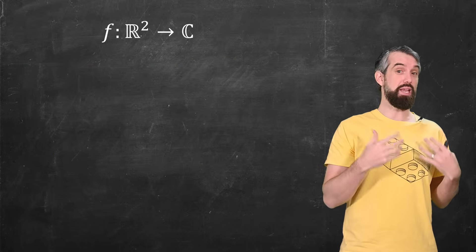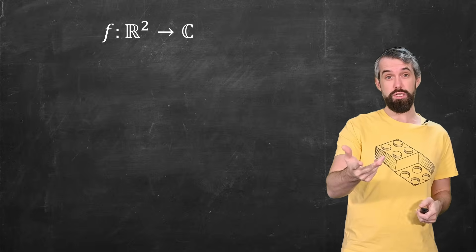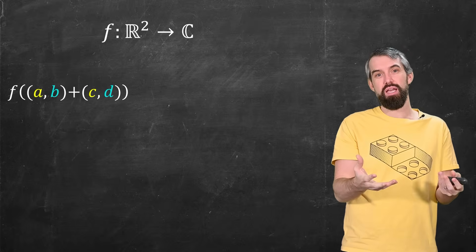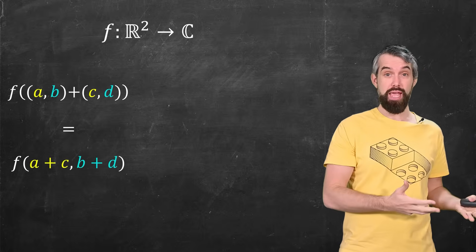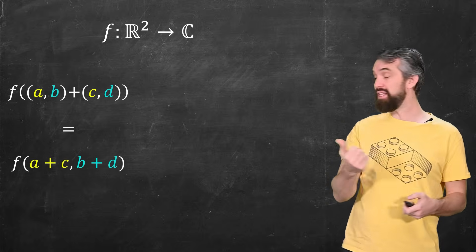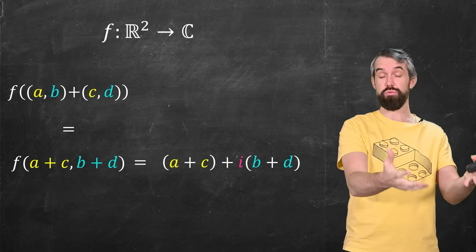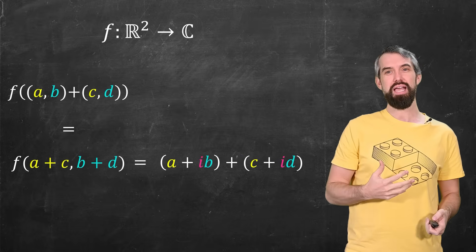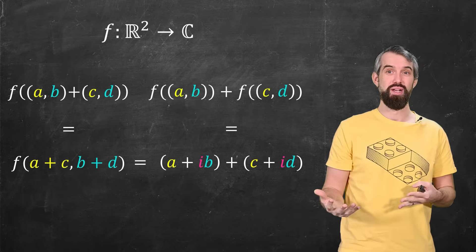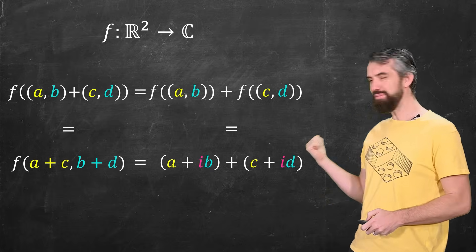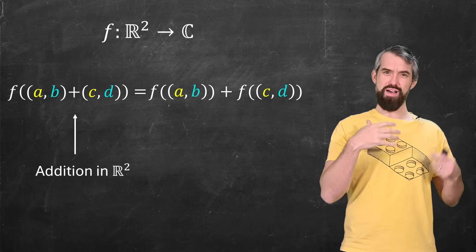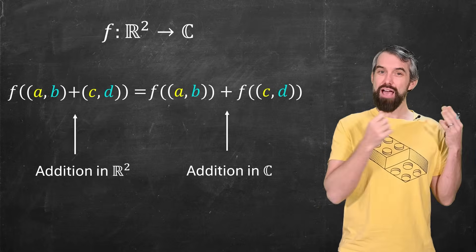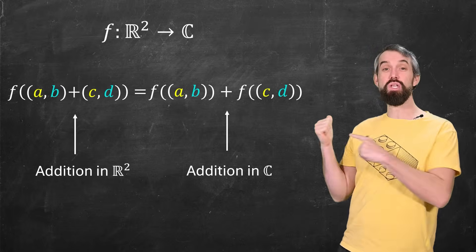And ultimately, the way we express this in mathematics formally is, remember that function that went between the two? Well, if I say, what happens if I take this function and I add two things ab plus cd? I can do that addition in the real plane and get ac plus bd. If I take the function that's going to give me this complex number, my function takes the pairs of real numbers and spits out a complex number. And then that's just what the function would do to ab plus what the function would do to cd.